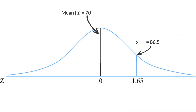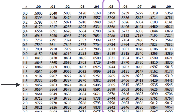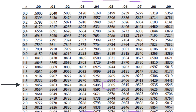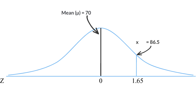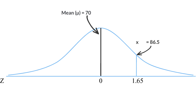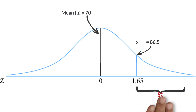We can convert the z-score into a probability using a z-table. A z-score of 1.65 corresponds to a probability of 95.05%, meaning about 95% of the scores on exam 1 are lower than 86.5, or roughly 5% of students scored 86.5 or higher.